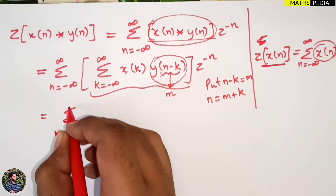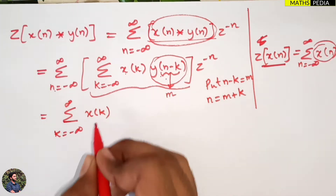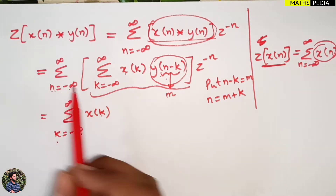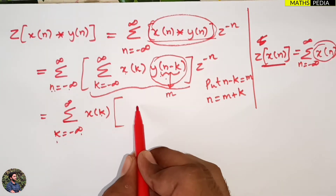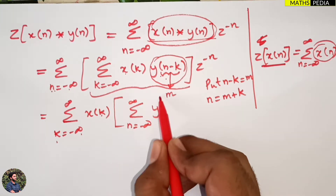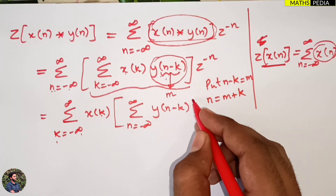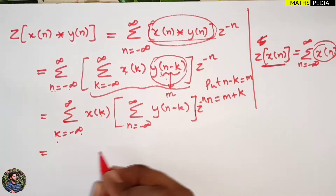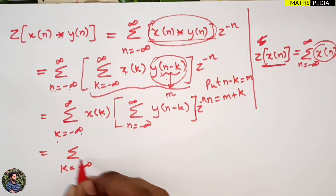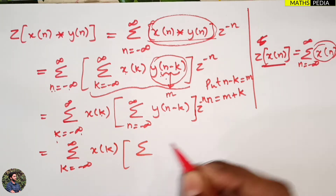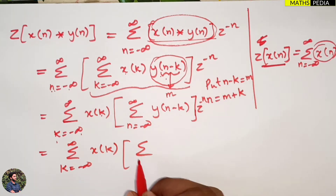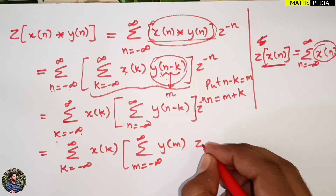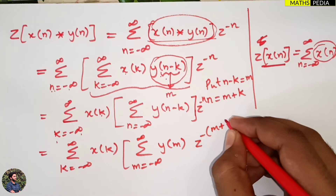Now I substitute a new variable: let n − k = m, so n = m + k. The inner summation over n becomes a summation over m from −∞ to ∞ of Y(m)·Z^(−(m+k)). So the full expression becomes: summation over k of X(k), times summation over m of Y(m)·Z^(−m−k).